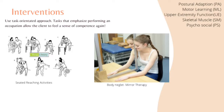For motor learning, for example, if you have body neglect, that girl shown there is using mirror therapy — that's another form of intervention. As you'll see on the next couple of slides, I like to use pictures of different interventions. They aren't every intervention out there, but they give you a visual idea. You can always go on YouTube and look up motor learning interventions OT or kitchen prep — things like that.